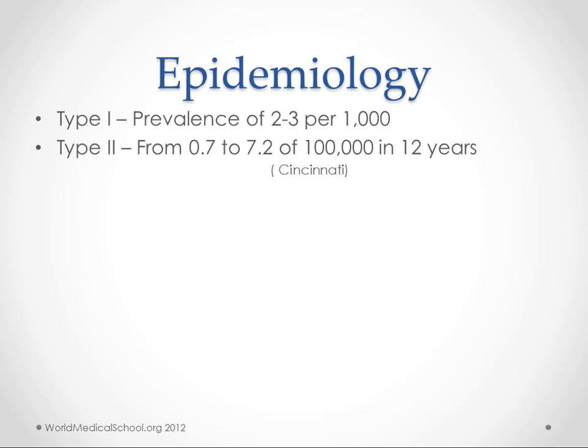Type 1 diabetes is the most common diabetes in children, and it happens to about 2 to 3 out of 1,000 kids, roughly ages 3 to 15. We don't have great numbers on type 2 diabetes, but the most important thing about that epidemiology is that it is increasing rapidly. One study from Cincinnati found numbers increased from about 0.7 to 7.2 out of 100,000 between 1982 and 1994 — a tenfold increase in 12 years — and those numbers are still climbing.